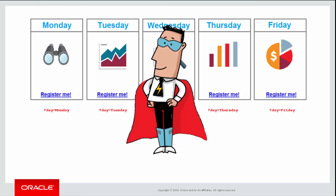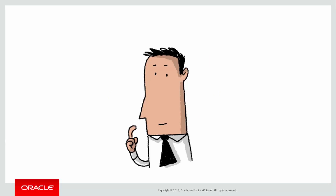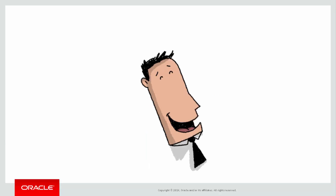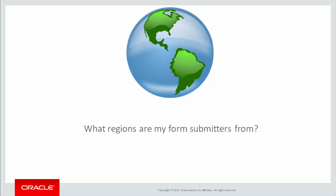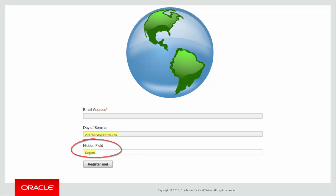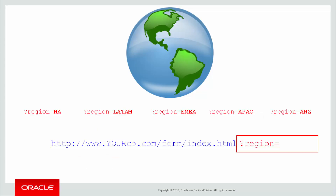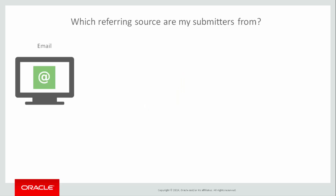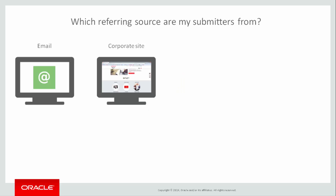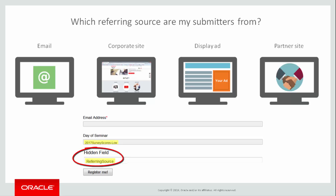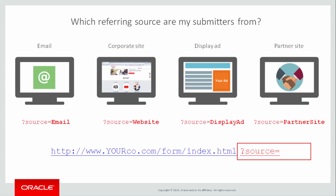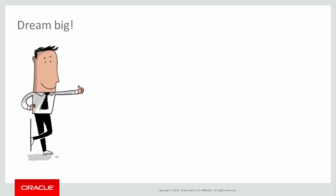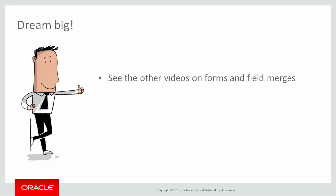So that's what MyCo did for their PowerWeek webinar series. What can you do with query string field merges? Since you define the data that is being captured, the options are limitless. Do you want to know which regional hyperlinks visitors use to arrive at your landing page? Add a hidden field to your form and use a query string to identify the source region — then you can assign form submitters to regional sales reps. Maybe you want to know the referring source of your leads: did they use a hyperlink in an email, on your website, a display ad, or a partner website? Add a hidden field and use a query string field merge to identify how visitors arrived, then assess the performance of your links. The options abound, so dream big with your ideas for query string field merges. For more information see the other form-related videos in Oracle Help Center videos.